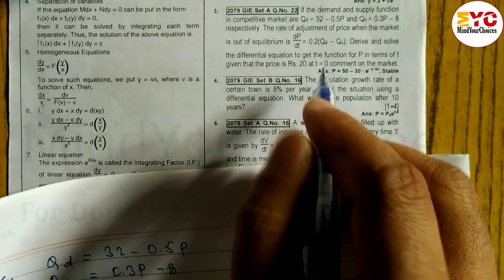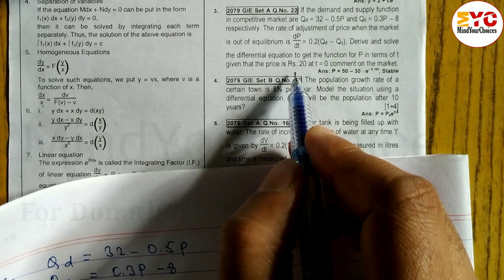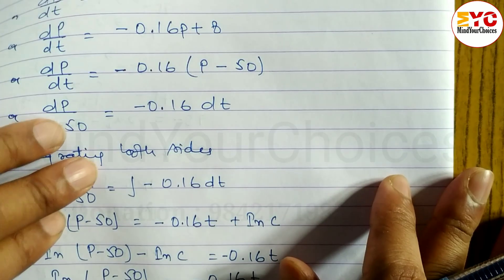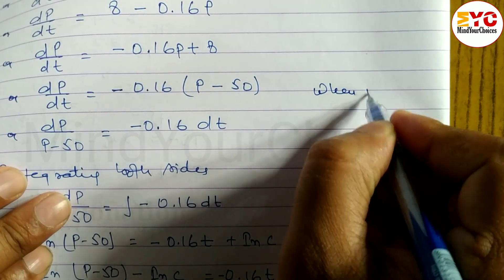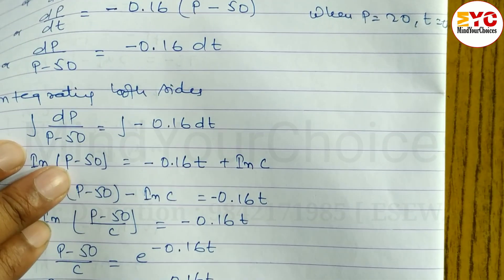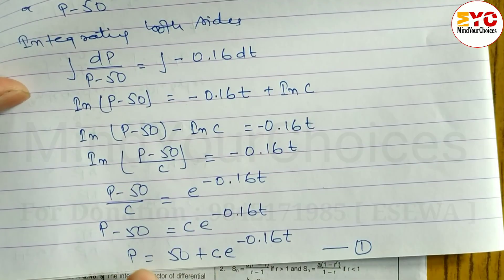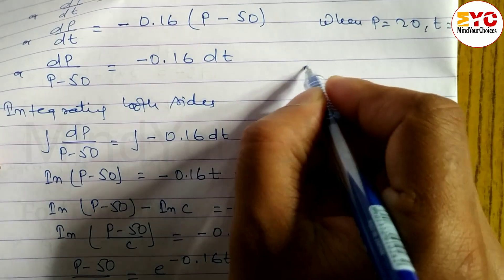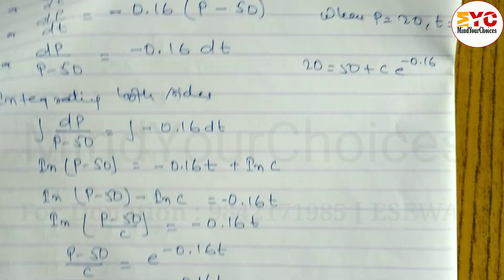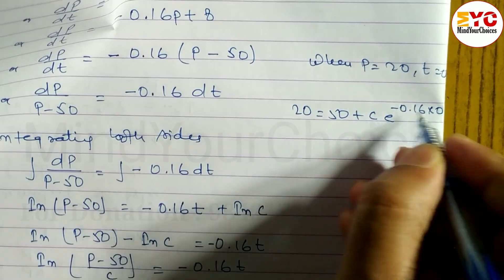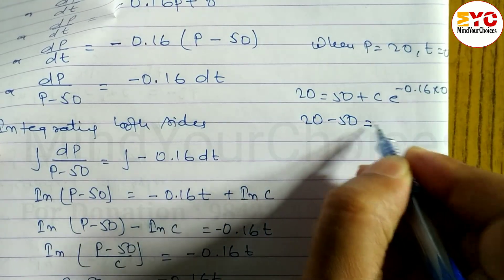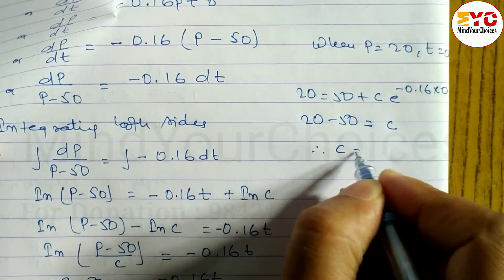Applying the initial condition: when p equals 20 and t equals 0, substitute into equation one. We get 20 equals 50 plus C times e to the power of 0. Since e to the power of 0 equals 1, we have 20 equals 50 plus C, therefore C equals 20 minus 50, so C equals negative 30.